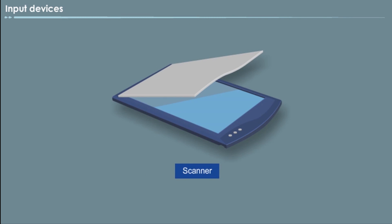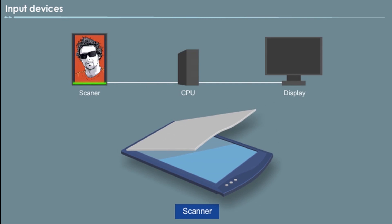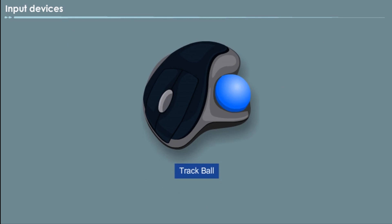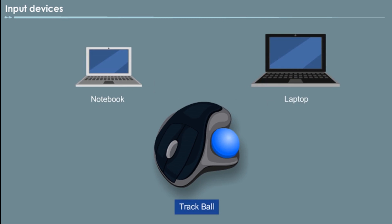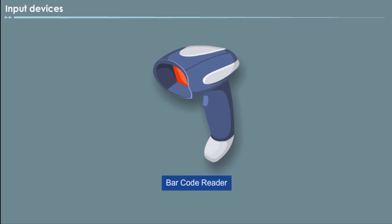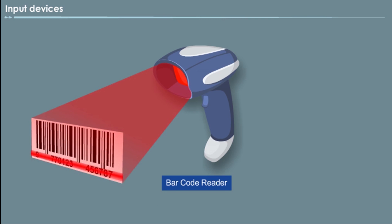Scanner. Scanners allow you to convert pictures and photographs to your computer. A scanner scans the image and transfers it to the computer. Trackball. Trackball is an input device that is mostly used in notebook or laptop computers instead of a mouse. Barcode reader. A barcode reader is a device used for reading barcoded data, that is, data in the form of thin and thick lines. Barcoded data is generally used in labeling goods, numbering books, etc.